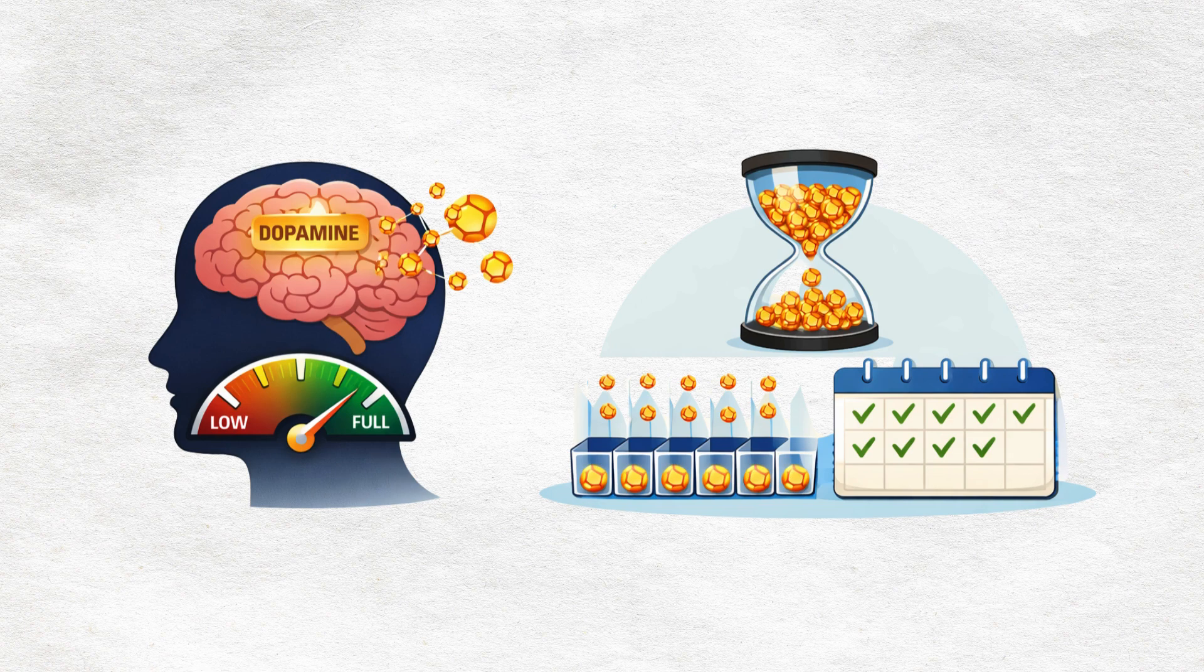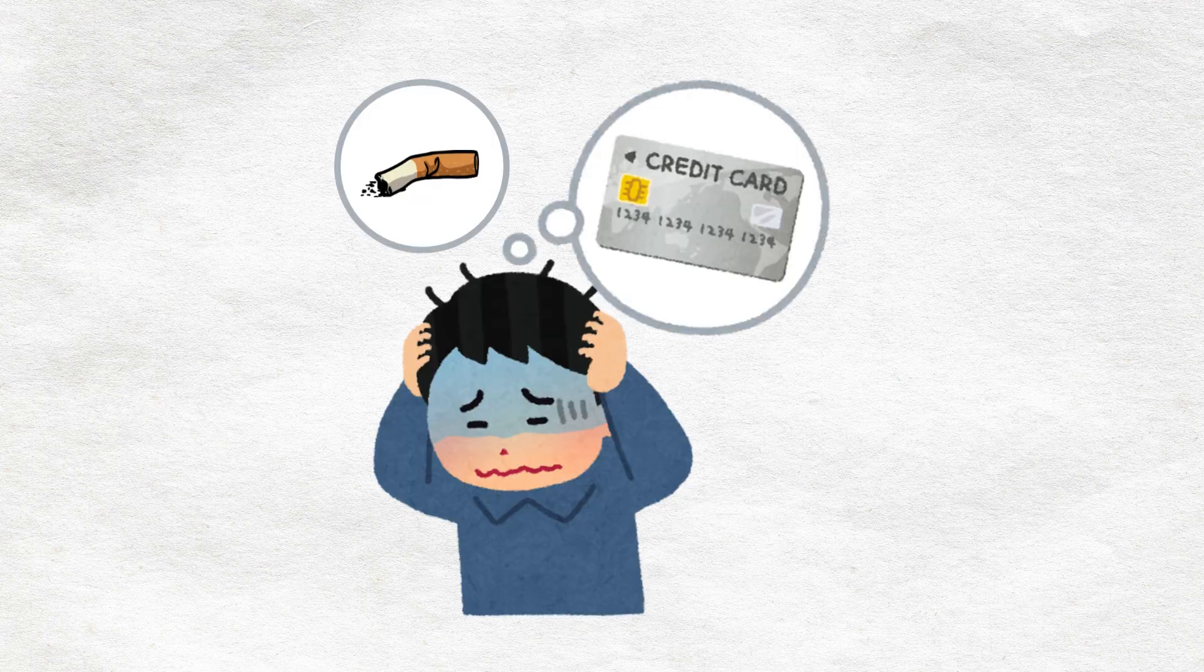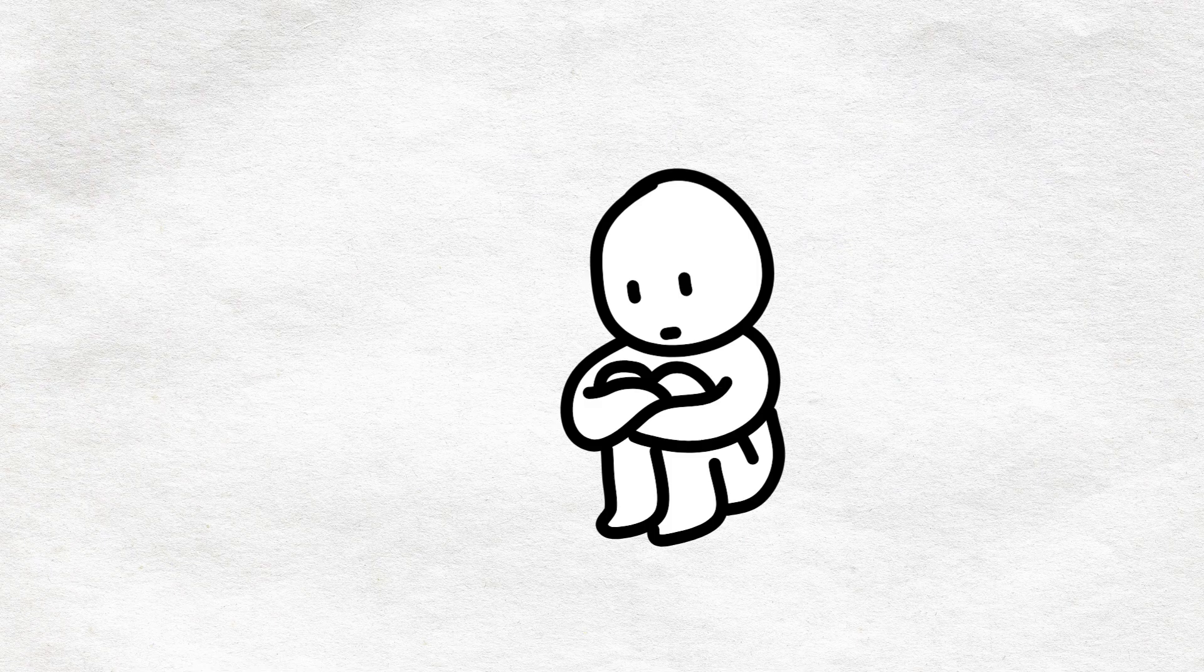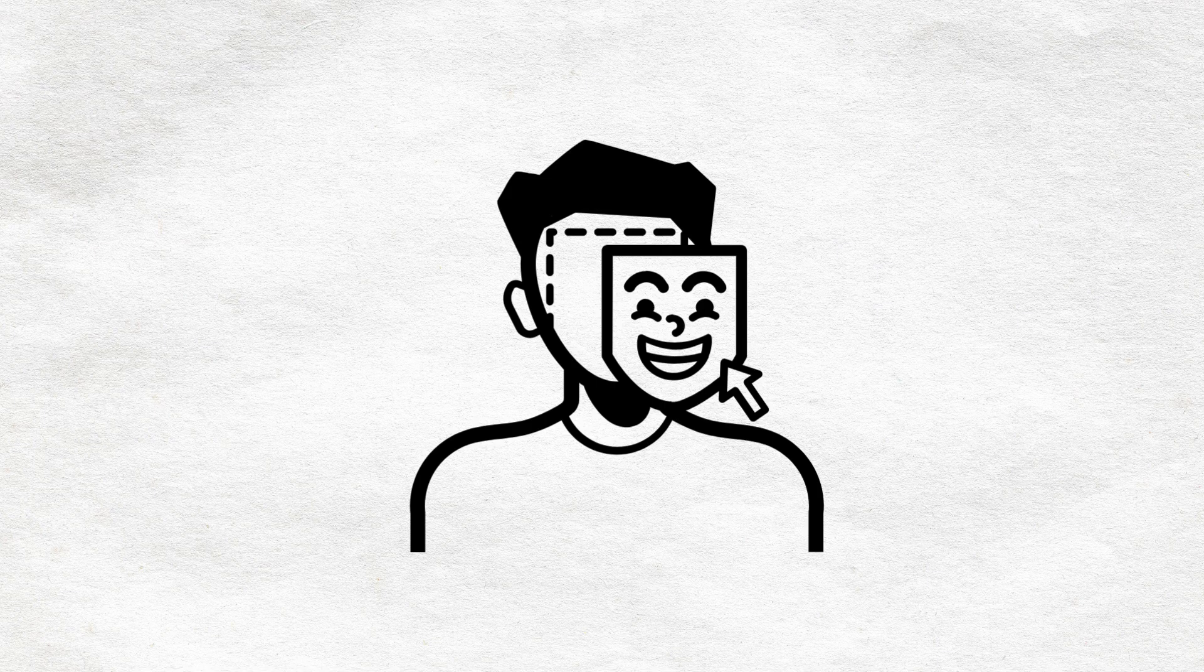But here's what they don't tell you: that happiness isn't free. Your brain is spending dopamine it normally rations carefully throughout the day. It's like maxing out a credit card of joy. When it wears off, you're left with less than what you started with, a subtle emptiness that makes the next high more tempting. Euphoria feels like a gift, but you're really just borrowing from your future self.